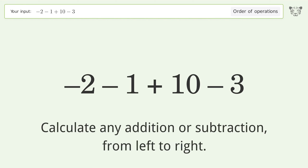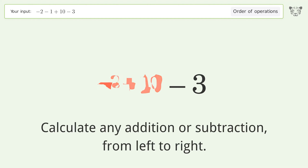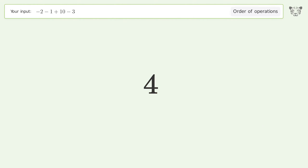Calculate any addition or subtraction from left to right. Negative two minus one equals negative three. Negative three plus ten equals seven. Seven minus three equals four. And so the final result is four.